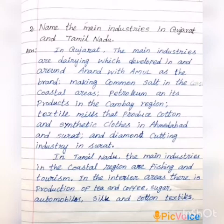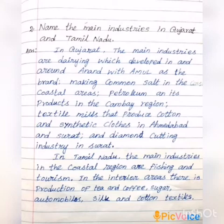In Tamil Nadu, the main industries in the coastal region are fishing and tourism. In the interior areas, there is production of tea and coffee, sugar, automobiles, silk and cotton textiles. In both states, tourism is also an important industry.